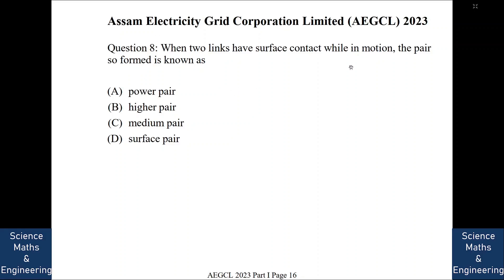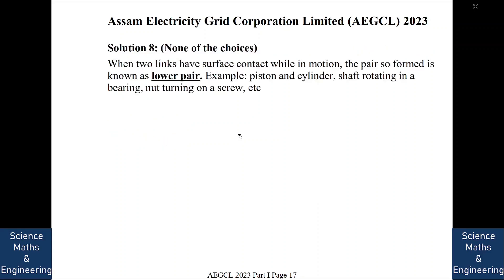Now maybe this answer A, it is a printing mistake. It should have been a lower pair. However, we are taking the official paper from AEGCL. So we are keeping that option as it is. So then in that case, none of the option is correct. Otherwise it is a lower pair. We'll go to the next question.